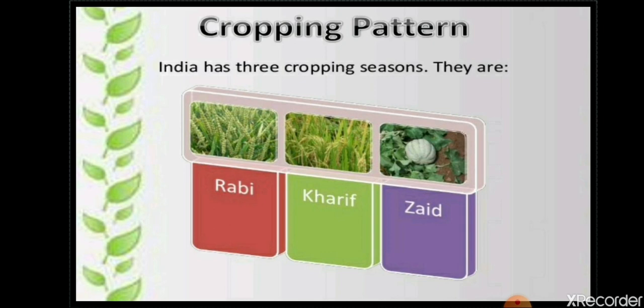Before starting the crops, let's begin with cropping pattern. Cropping pattern means how farmers grow crops in their field over one year. In our country India, farmers follow three cropping seasons. The year has 12 months, and India is a diverse nation with varying physical elements, so climatic conditions change throughout the year. According to those seasonal changes, we have three seasons: Rabi, Kharif, and Zaid.